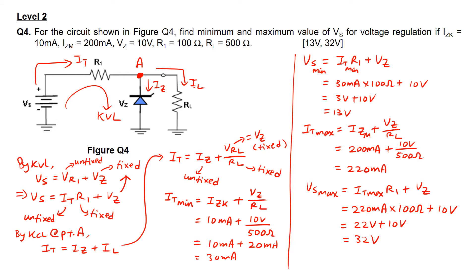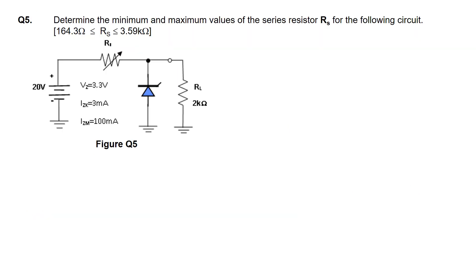That's for question 4. Moving on to question 5, we are supposed to determine the minimum as well as maximum values of the series resistor RS. We are given Vz equals 3.3 volts, Izk equals 3 mA, Izm equals 100 mA, RL equals 2 kΩ, and the voltage source Vs equals 20 volts.